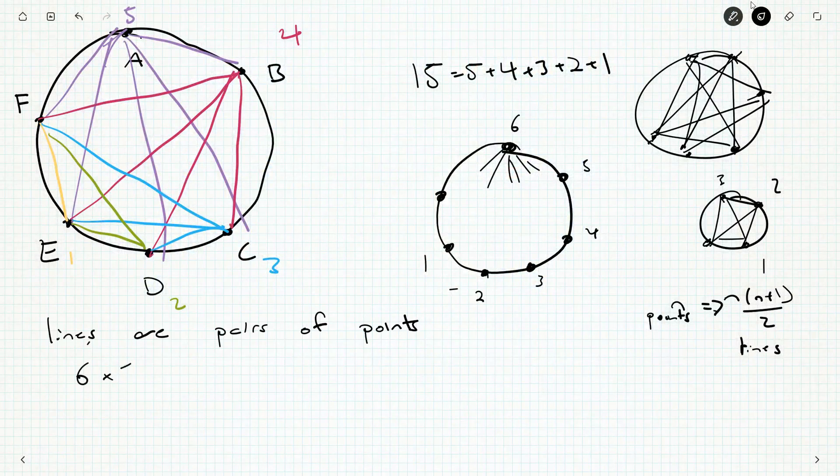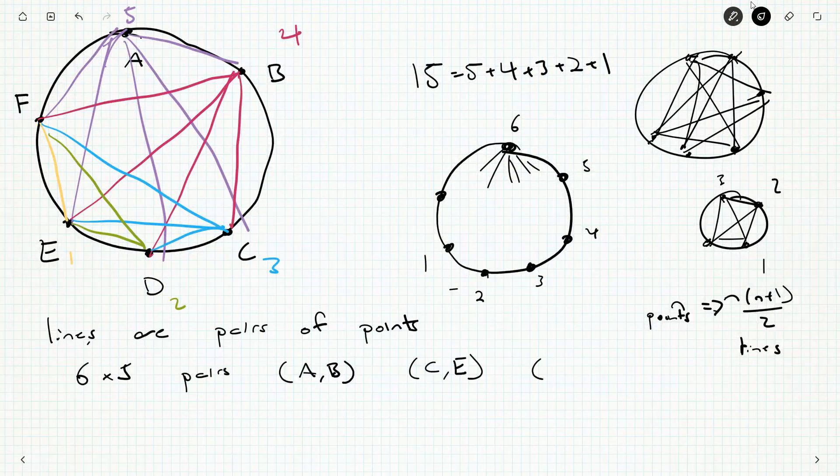And so if I wanted to pair each letter up with another one, I could do six choices for that first letter. And then there's five other points that that letter can be paired to. That gives me a total of 30 pairs. So we could view lines as pairs of points. So there are six times five pairs of things like A, B, and that's the line from A to B. Or C, E, and that's a line from C to E. When we think about this ordered pair here, I've got one, two, three, four, five, six, any letter will do here.